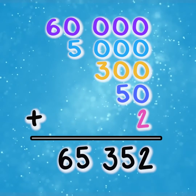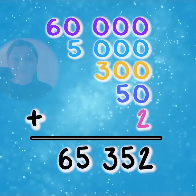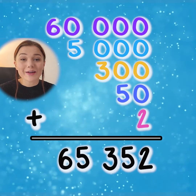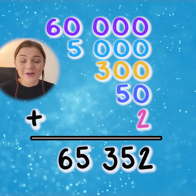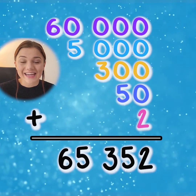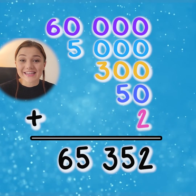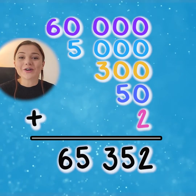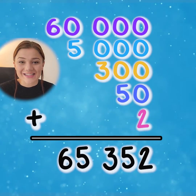Three hundred and fifty-two. It's really important that we keep all of our numbers in the right column when we are adding, as you can see that I've done here, in order to make sure that our addition is correct.